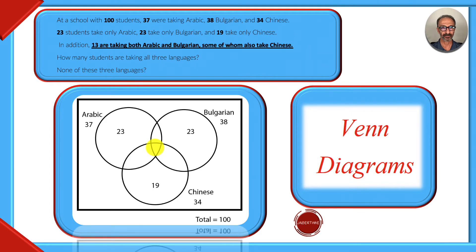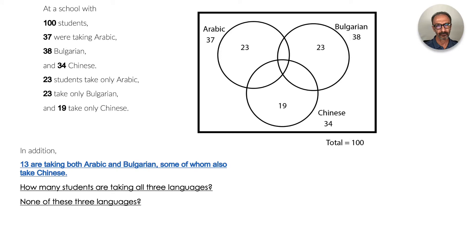How many students are taking all three languages? That's this portion. And none of these three languages? That means out of the three circles, out here. Let's get started.